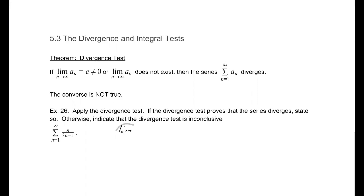So, the limit as n goes to infinity of n over 3n minus 1, that corresponding sequence, that limit is going to be one-third.